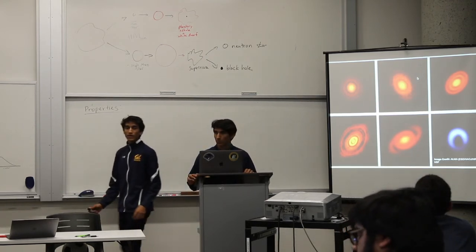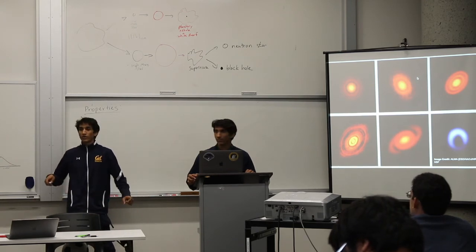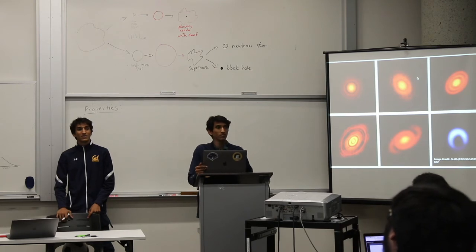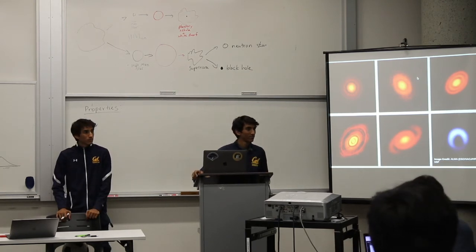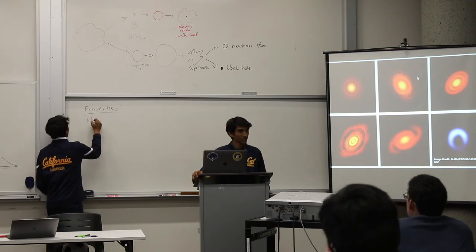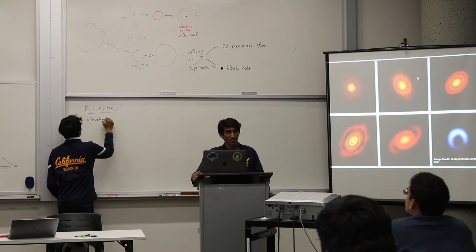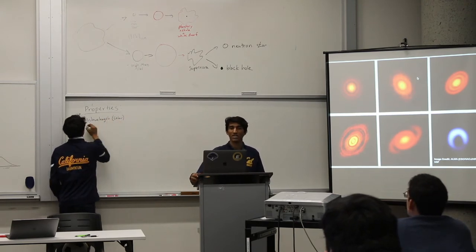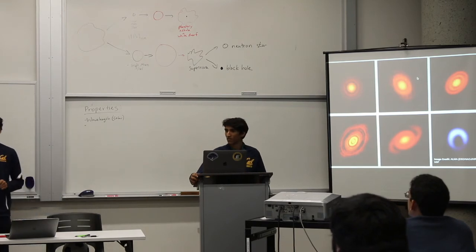Each of these properties has a name. Measurement of the position of things is called astrometry — also just imaging. Measuring the brightness of objects is called photometry. Measuring the wavelength is called spectroscopy or spectrometry. And measurement of the polarization — astronomers are not very creative with names.